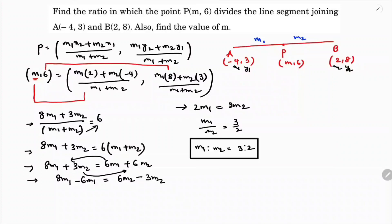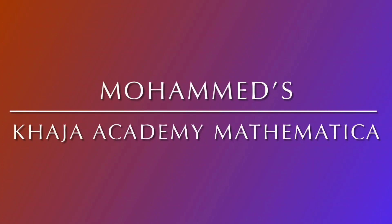So now you can equate abscissa with abscissa. M equals 2M1 - 4M2 by M1 + M2. 2 times M1 is 3 minus 4 times M2 is 2 by 3 + 2. 6 minus 8 by 5 which is -2 by 5. So the value of m is -2/5.